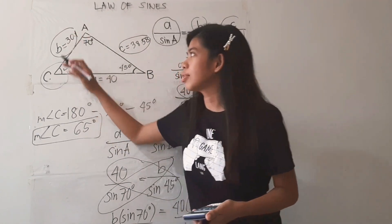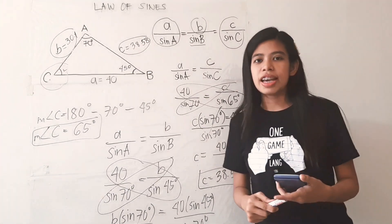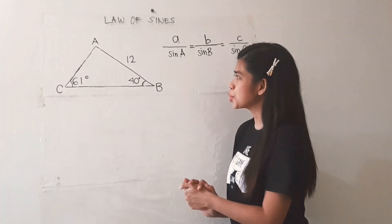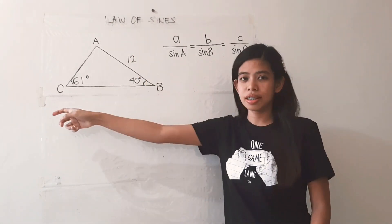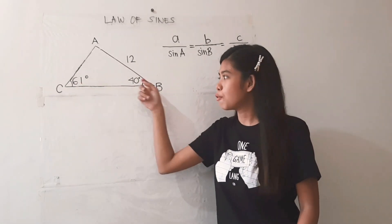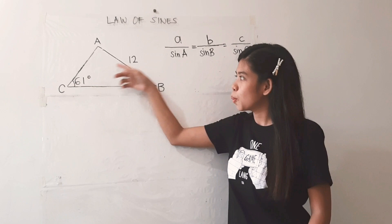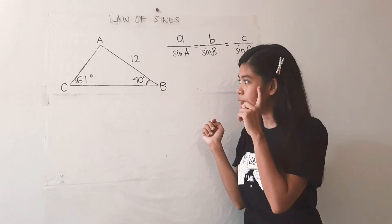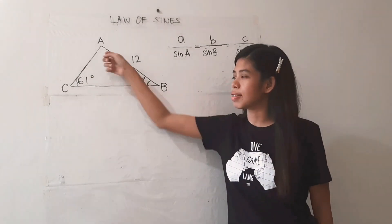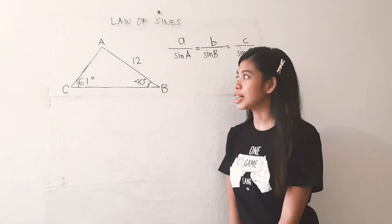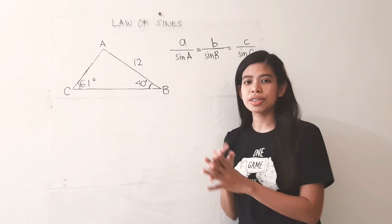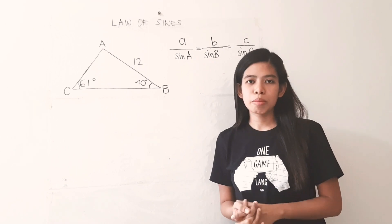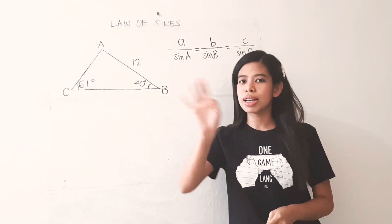That's it. We have found the measures of all the sides and all of the angles using the Law of Sines. I'm going to give you an activity: given oblique triangle ABC with angle B equal to 40 degrees, angle C equal to 61 degrees, and side c measuring 12, use the Law of Sines to find side b, side a, and angle A. That's it for today. May God bless you all.